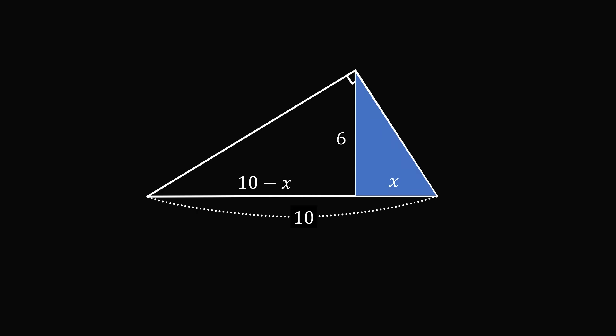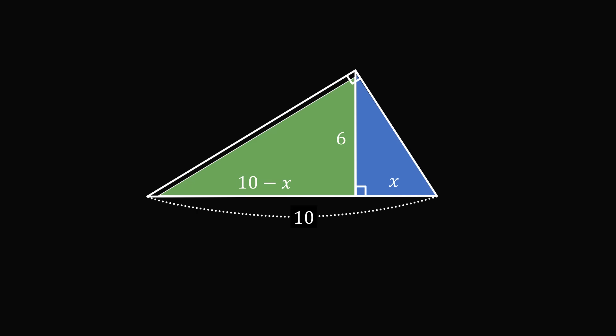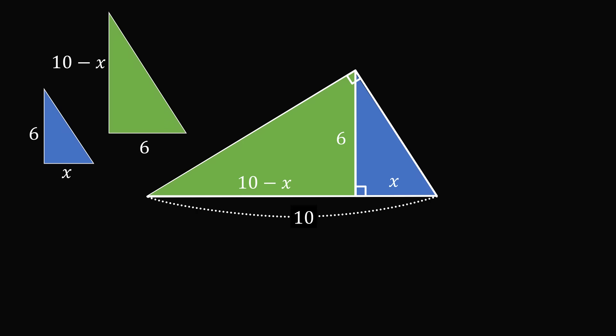So one of the triangles has legs of 6 and x. Now if we rotate this triangle, we'll see that it is similar to the other triangle inside of this large triangle. So we have similar triangles. We have 6 over x in one triangle and we have 10 minus x over 6 in the other. Since we have similar triangles, the legs must be in the same ratio. So we have 6/x is equal to (10 minus x)/6.